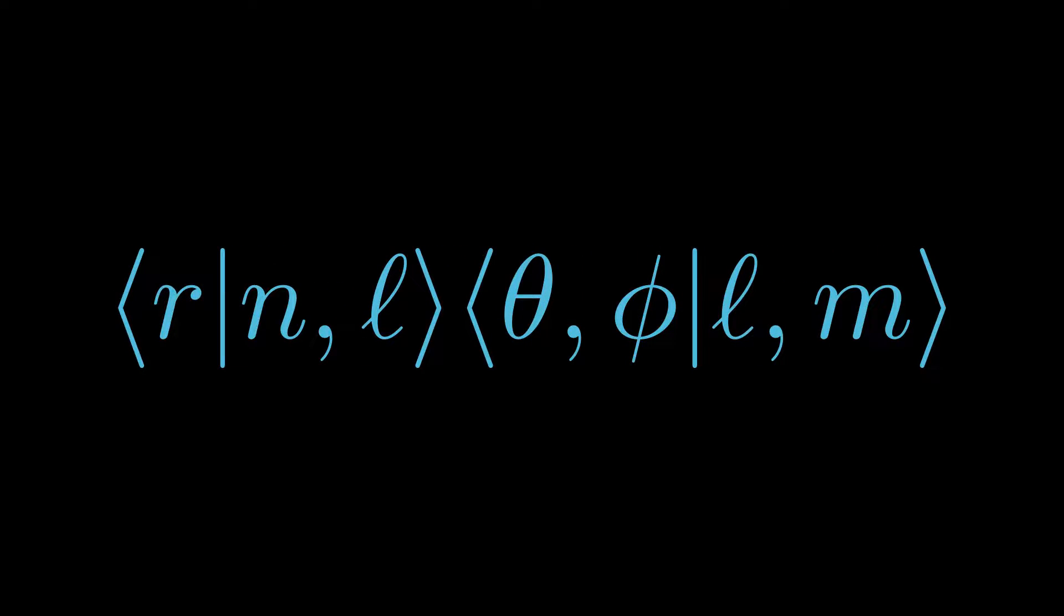We begin by writing the stationary states as a direct product of |nl⟩ and |lm⟩. Casting into the position representation in spherical coordinates gives us the product of inner products ⟨r|nl⟩⟨θ,φ|lm⟩. These inner products are in fact functions of the left argument of the bracket.